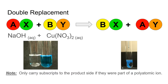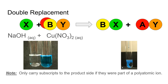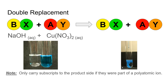In a double replacement reaction, two ionic compounds AX and BY react to form BX and AY. We have to imagine A and B literally switching places to make the new products BX and AY.